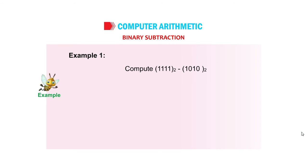Example 1: Compute (1111) base 2 minus (1010) base 2. 1111 minus 1010 equals 0101.